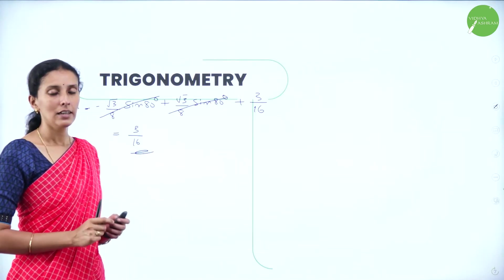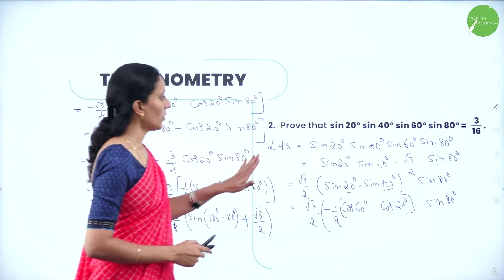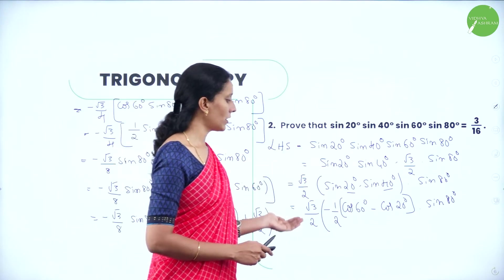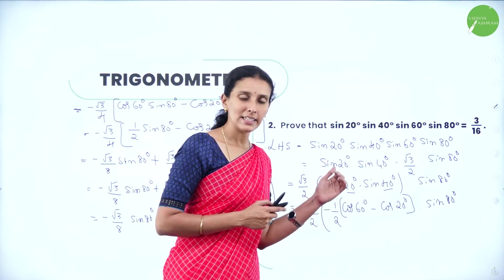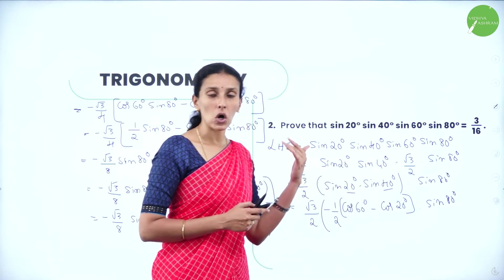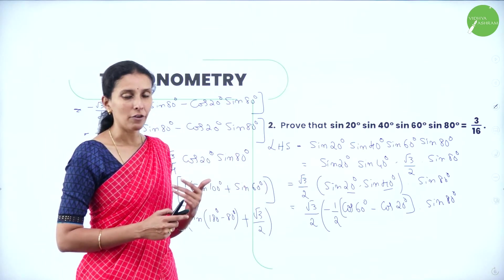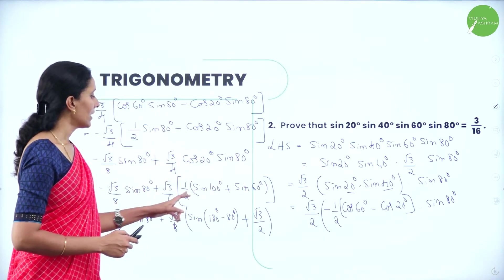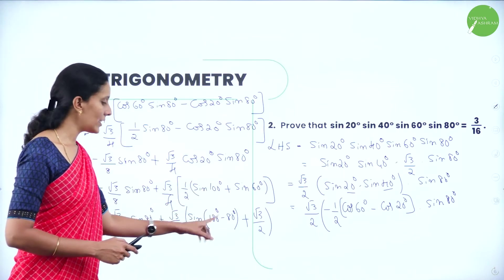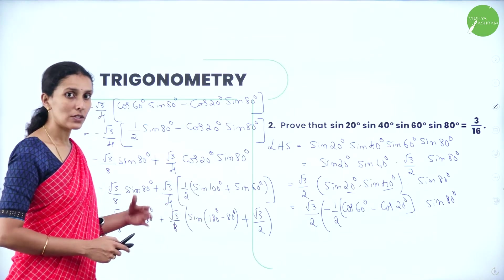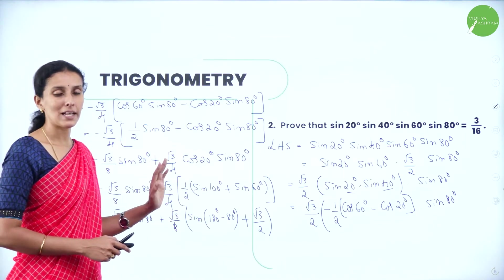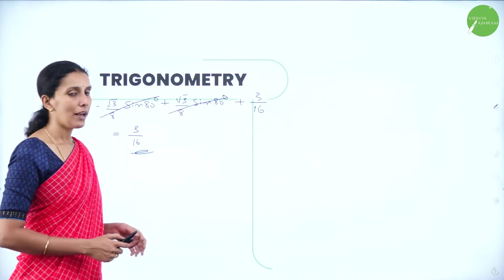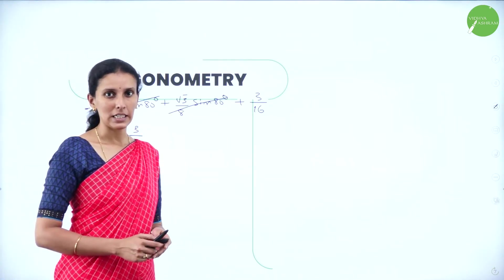The resultant is 3/16, which equals the RHS of the required result. The key strategy is to rearrange terms, apply sinC·sinD and cosA·cosB transformation formulas, then write sin100° as sin(180°−80°) to get the common cancelling factor.